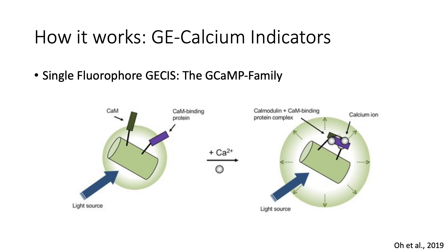There are many types of fluorescent calcium indicators with many different types of fluorescence mechanisms. Today, we will highlight just one type, and that is single fluorophore calcium indicators, specifically the GCAMP family. In general, you can use virus-mediated delivery of the GCAMP transgene to express GCAMP in a cellular population of interest. Once the sensor is expressed, the binding of calcium ions to the sensor causes a conformational change that results in increased light emission — an increase in fluorescence.